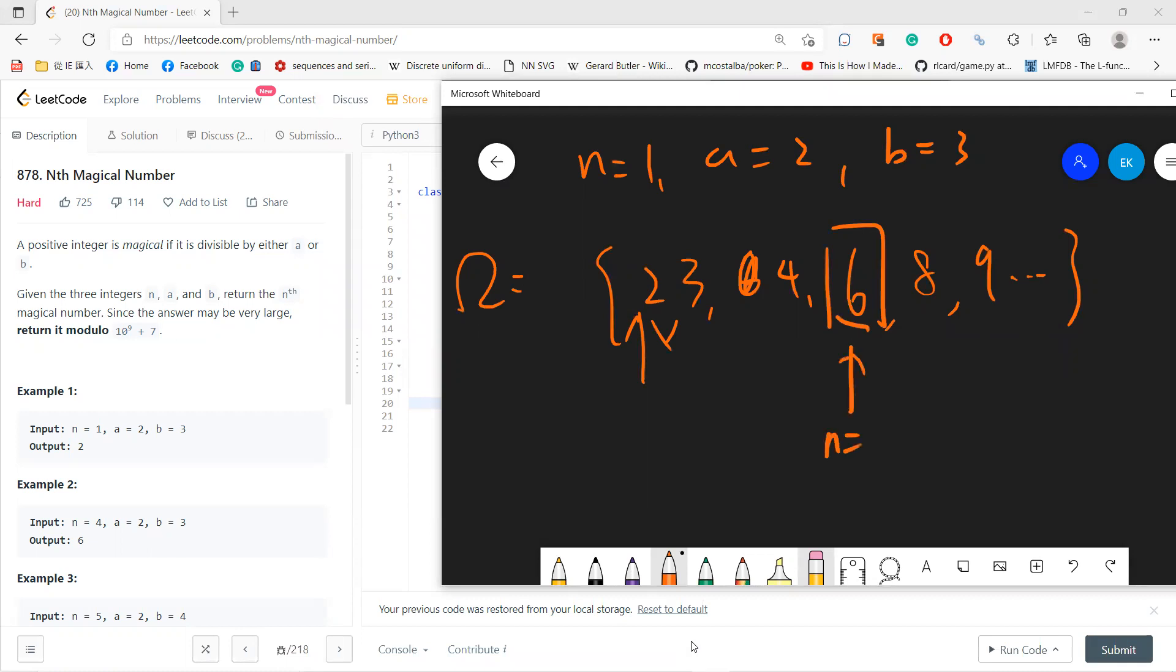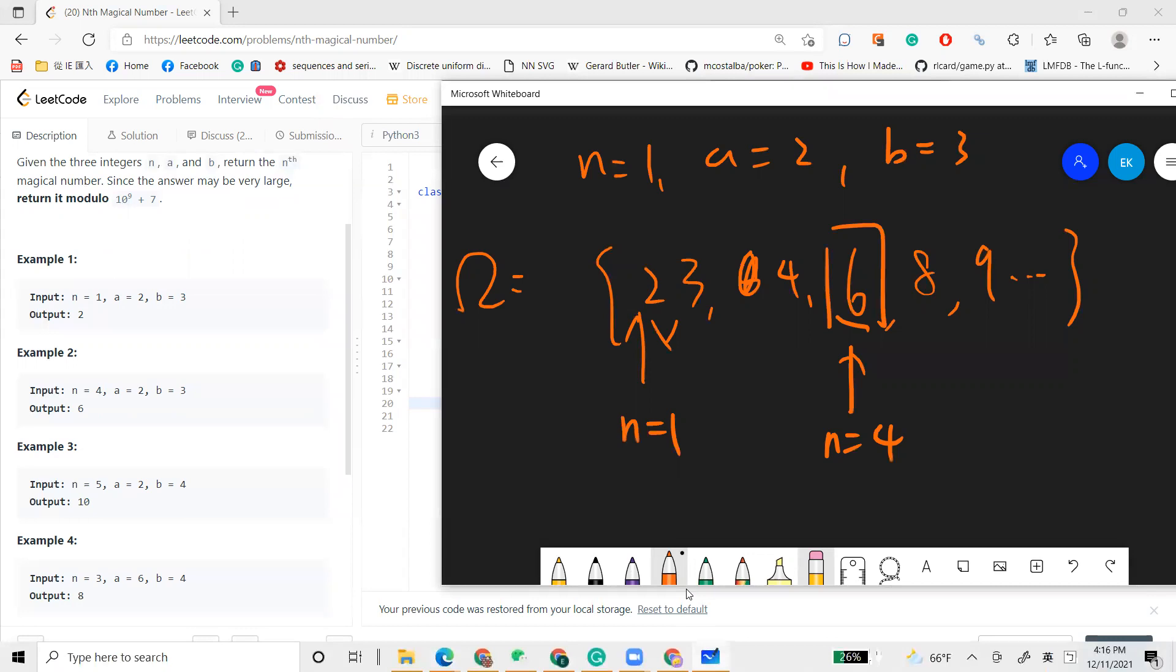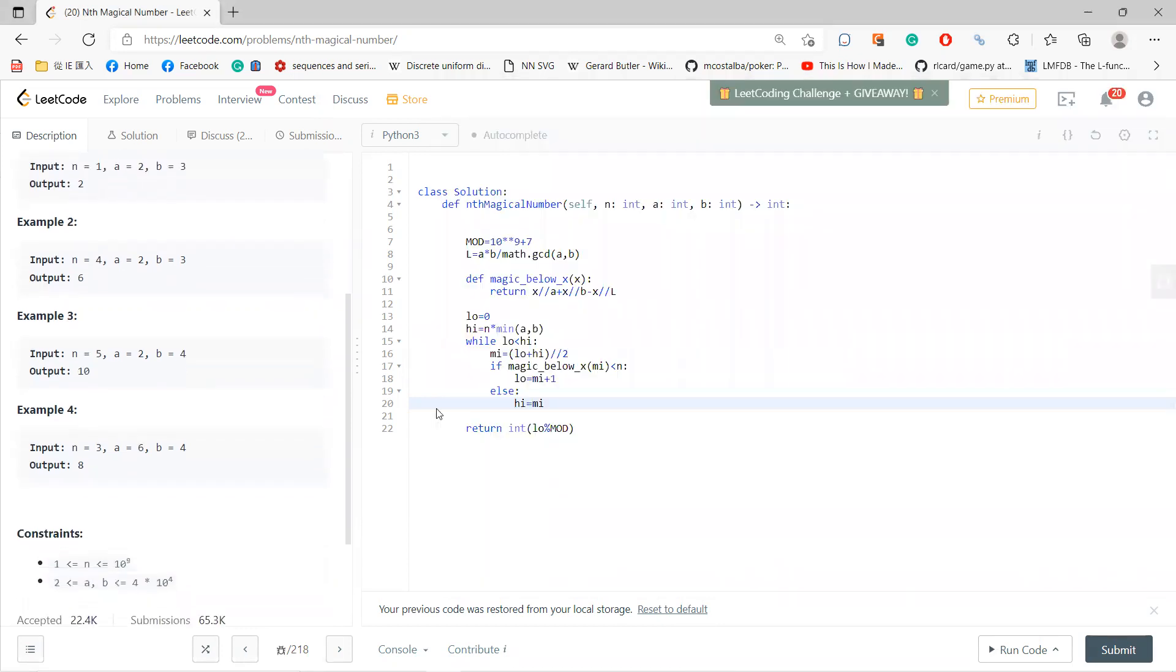So n equals 4, 2 to 3 should be at least, that should be 6. So this is n equals 4, n equals 1 and 2, 5, this is 10, right? Because let's say 2 and 4 is 10. Let's check it, so for 2 and 4, you get 2, 4, 6, 8, 10, right? So 10 is the fifth.